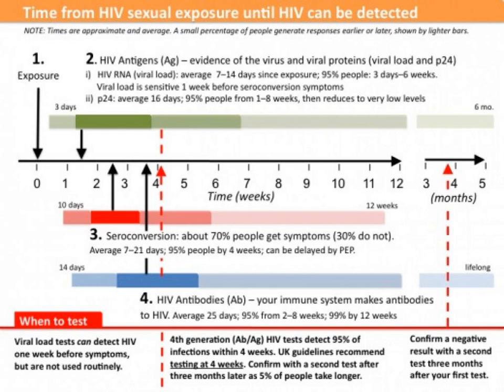Usually, p24 tests are combined into a single test with antibody screening. This is the so-called fourth generation HIV test, and they are also now available in a rapid test format.